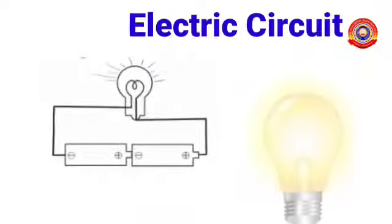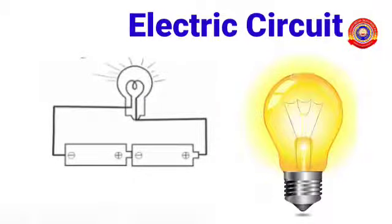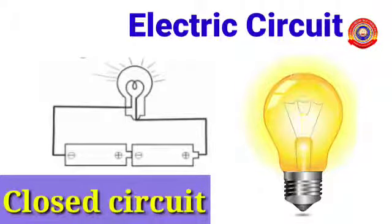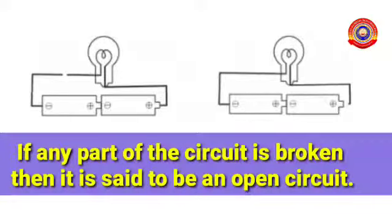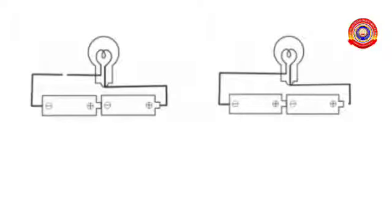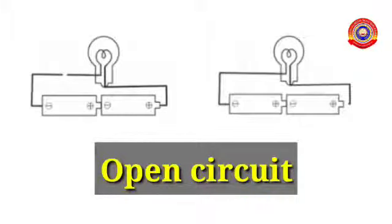And if the bulb glows, then we can say it is a closed circuit. Disconnect any part of the circuit. Does the bulb glow? No. If any part of the circuit is broken, then it is said to be an open circuit. These two circuits are examples for open circuit. In both of the two circuits, some points are not connected properly, so current can't flow from one terminal to the another. In such situation, we can say it is an open circuit.